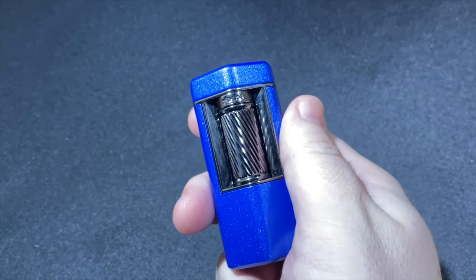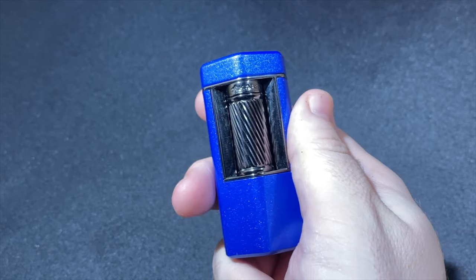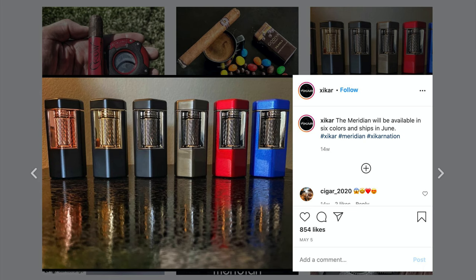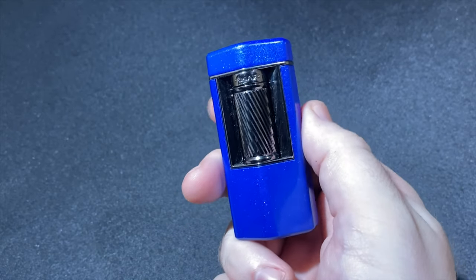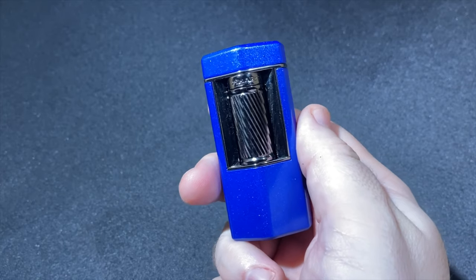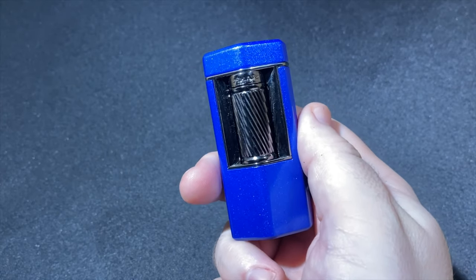So to give you a rundown on the Meridian, it's available in six colors. This is the blue and gunmetal option. There's also black and gunmetal, red and gunmetal, and for those who really like gunmetal, yes there is gunmetal and gunmetal. There's also black with gold and black with rose gold. Each of those six options is priced at $149.99 and comes with Zykar's limited lifetime warranty.